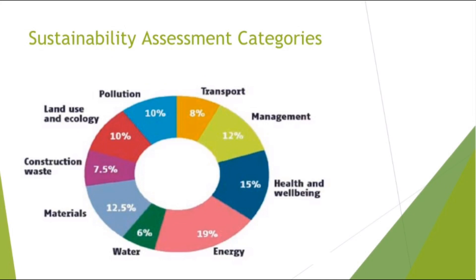The sixth category is materials, including green guide ratings from the impacts of building materials and their life cycle impacts. The seventh is waste, covering construction resource efficiency and operational waste management and minimization. The eighth is pollution, addressing external air, water, and noise pollution. The ninth is land use, concerning the type of site and building footprint. The tenth is ecology, covering ecological value, conservation, and enhancement of construction sites.